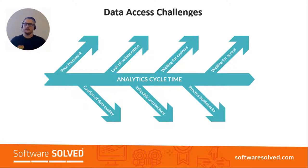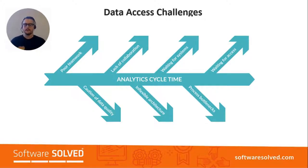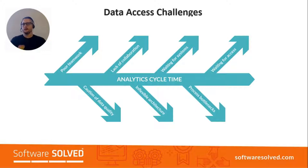What I want to draw attention to here is the analytic cycle time. This is the concept of the elapsed time between the proposal of a new idea — someone comes to the data team and asks a question or asks them to build a report — to the point at which that report or idea is analyzed and deployed to a position where you can make that decision. Slow analytics cycles can be caused by a number of differing factors, including poor teamwork. Teams may not be set up; you might not have a data team or data scientists.